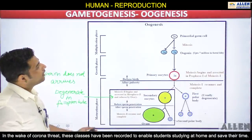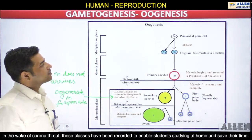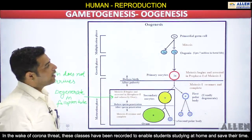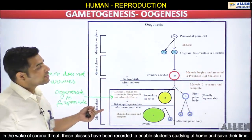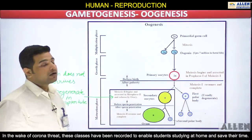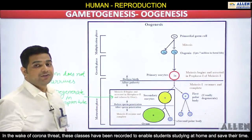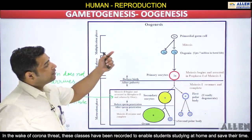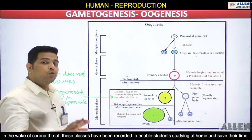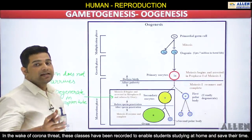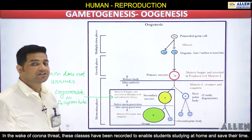In the schematic diagram of oogenesis: primordial germ cells through mitosis develop into oogonia — up to 7 million oogonia during fetal life up to the 25th week. The increasing number of oogonia is known as the multiplication phase. After that, these oogonia get nutrition and increase in size, becoming primary oocytes. This increase in size is known as the growth phase.